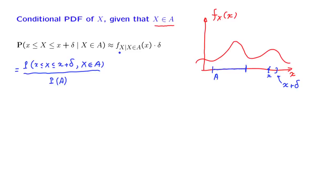This will imply that the conditional PDF is also going to be 0. This makes sense: conditioned on the event that X took values in this set, values of X out here cannot occur. Therefore, the conditional density out here should also be 0. So the conditional PDF is 0 outside the set A, and this takes care of one case.